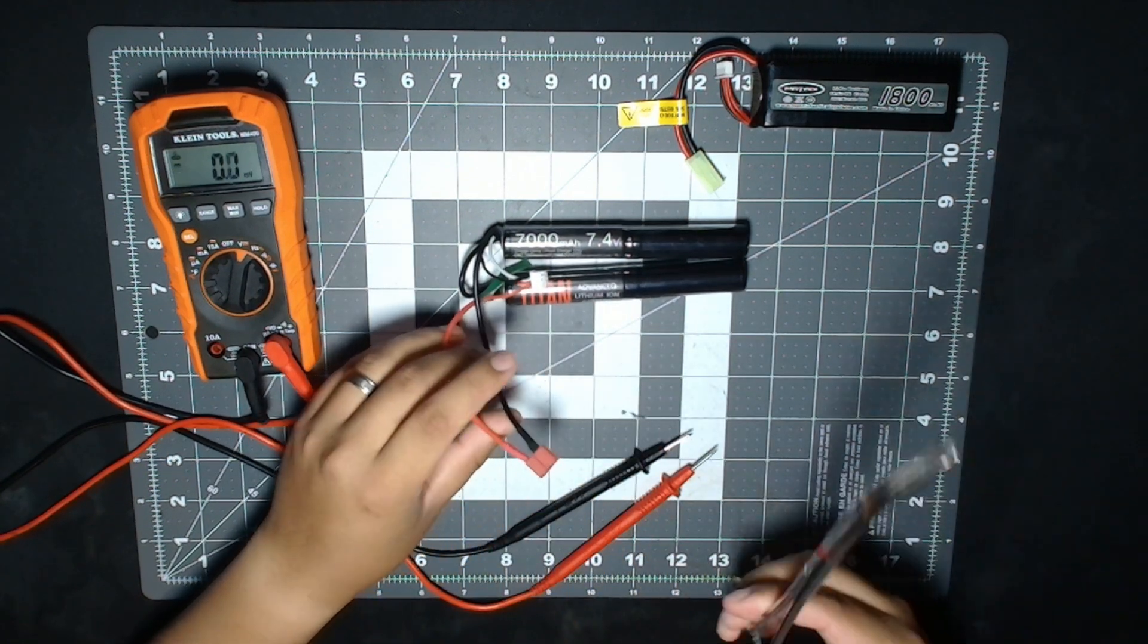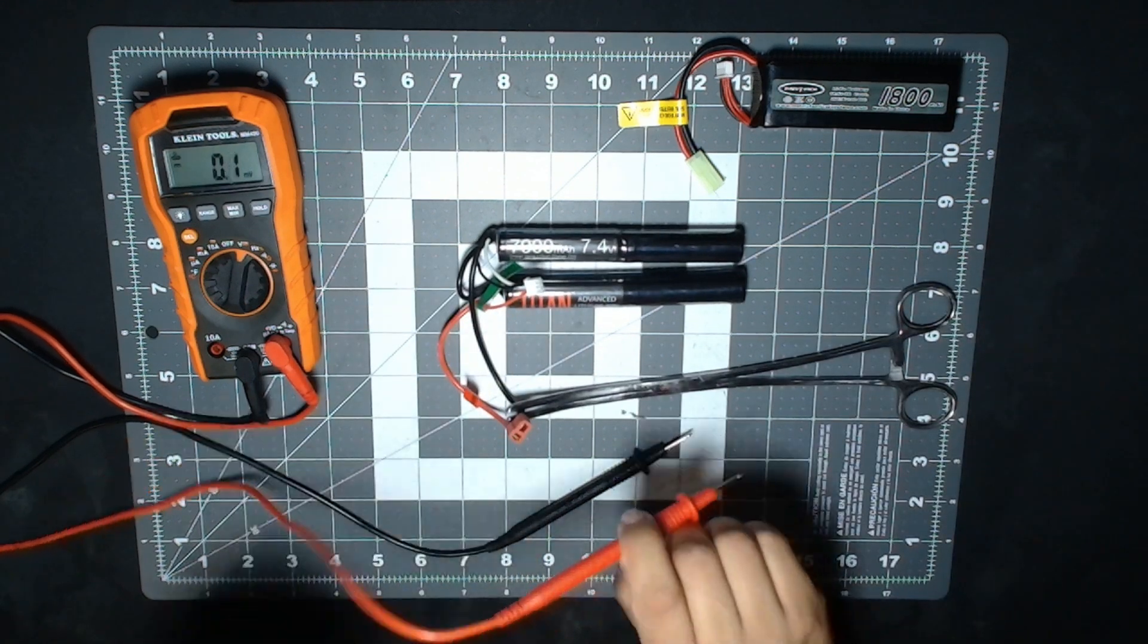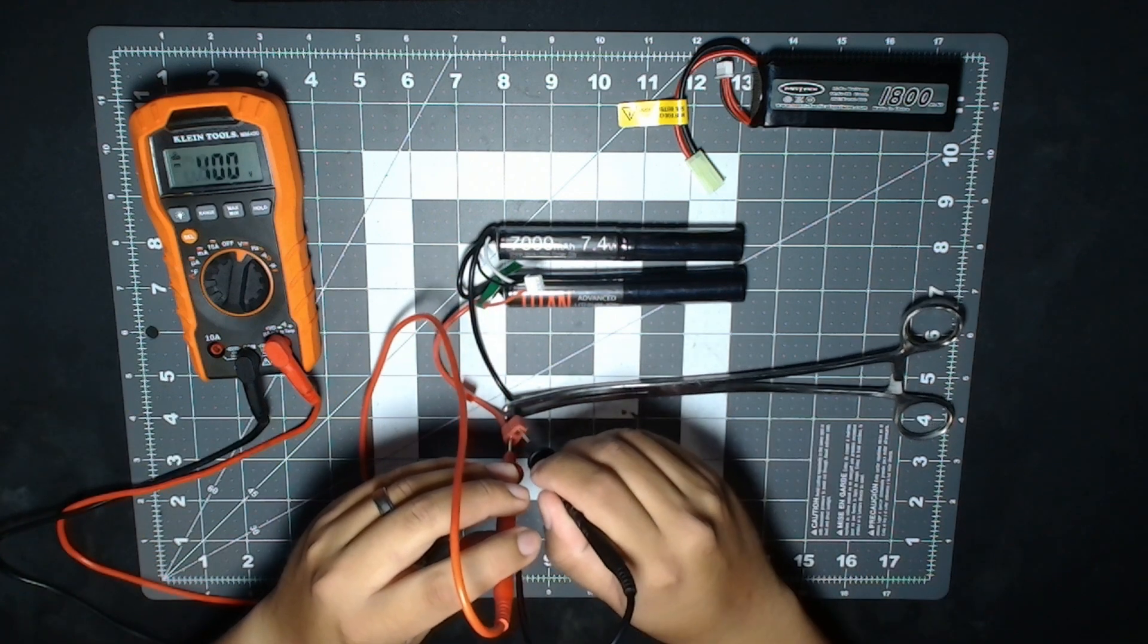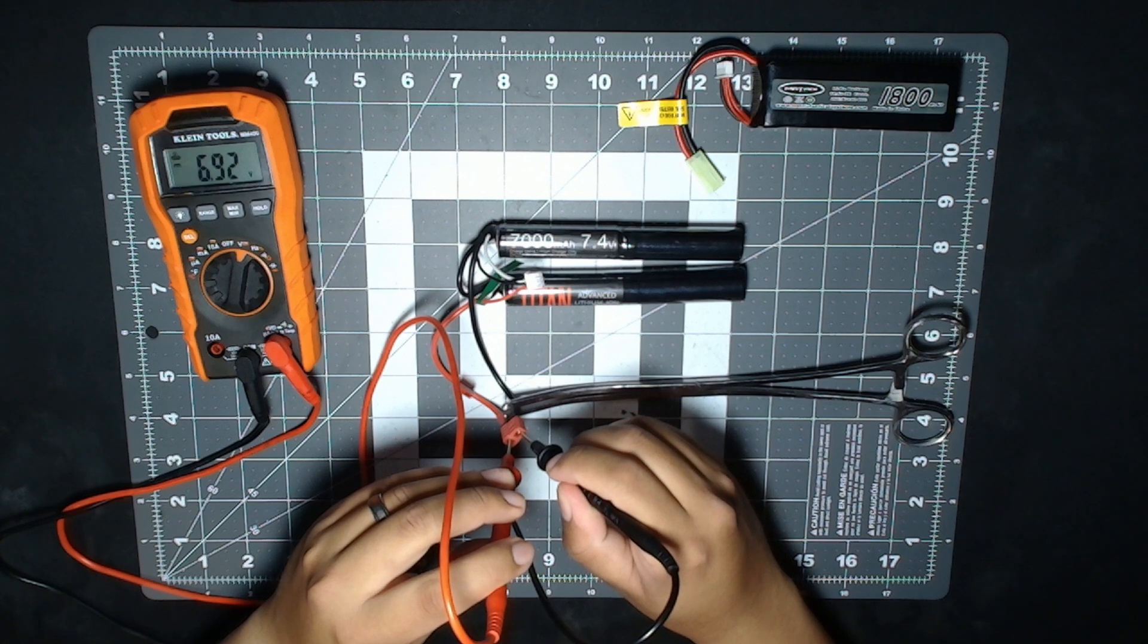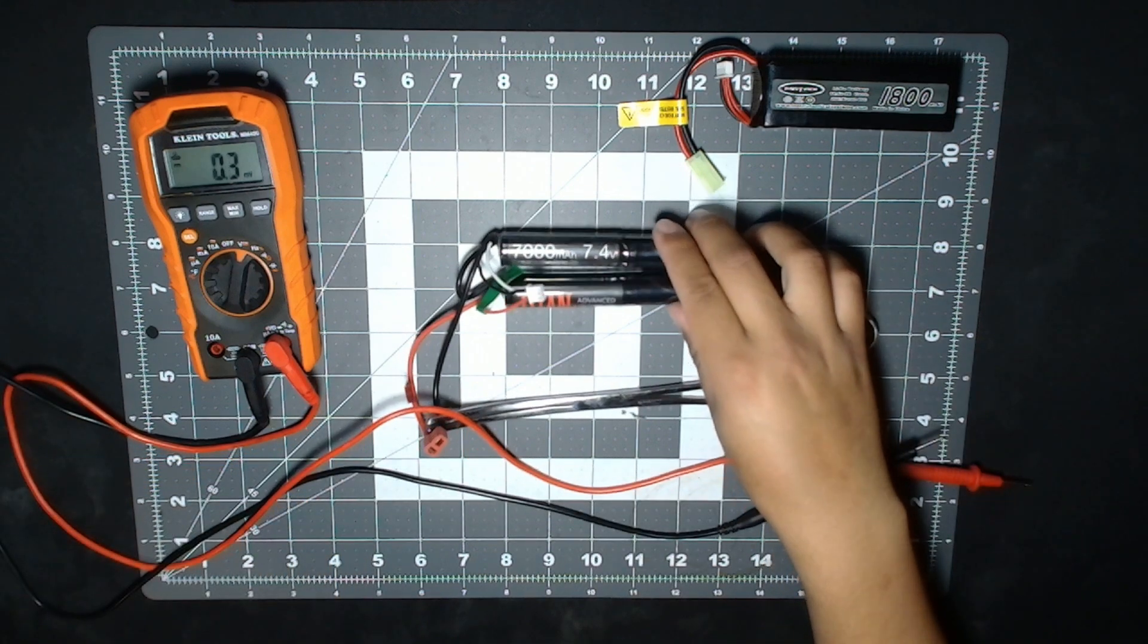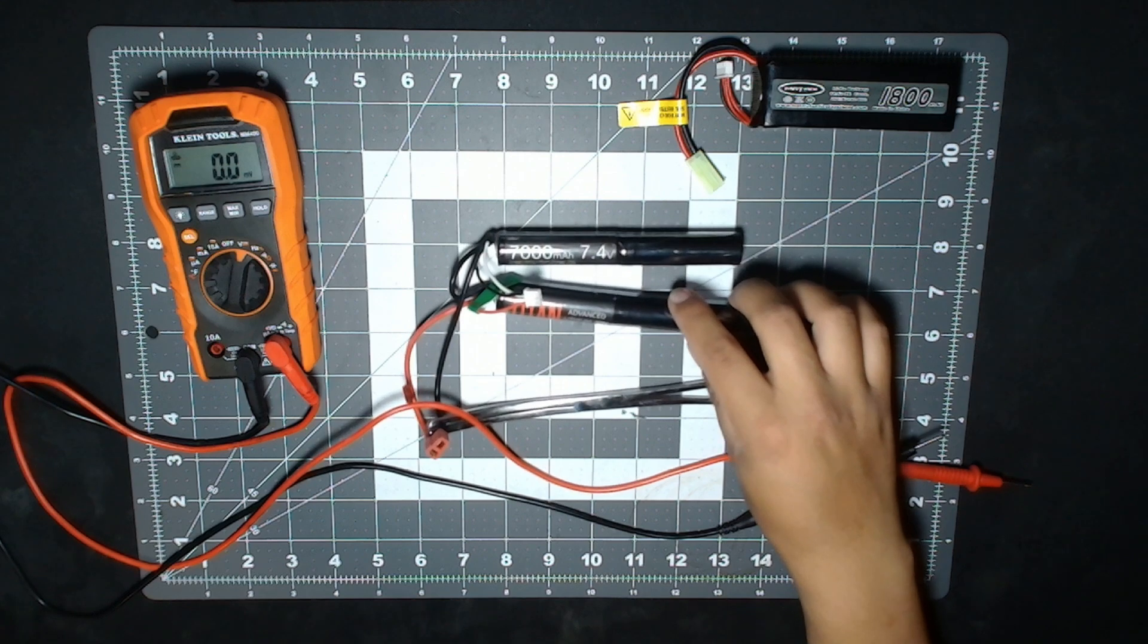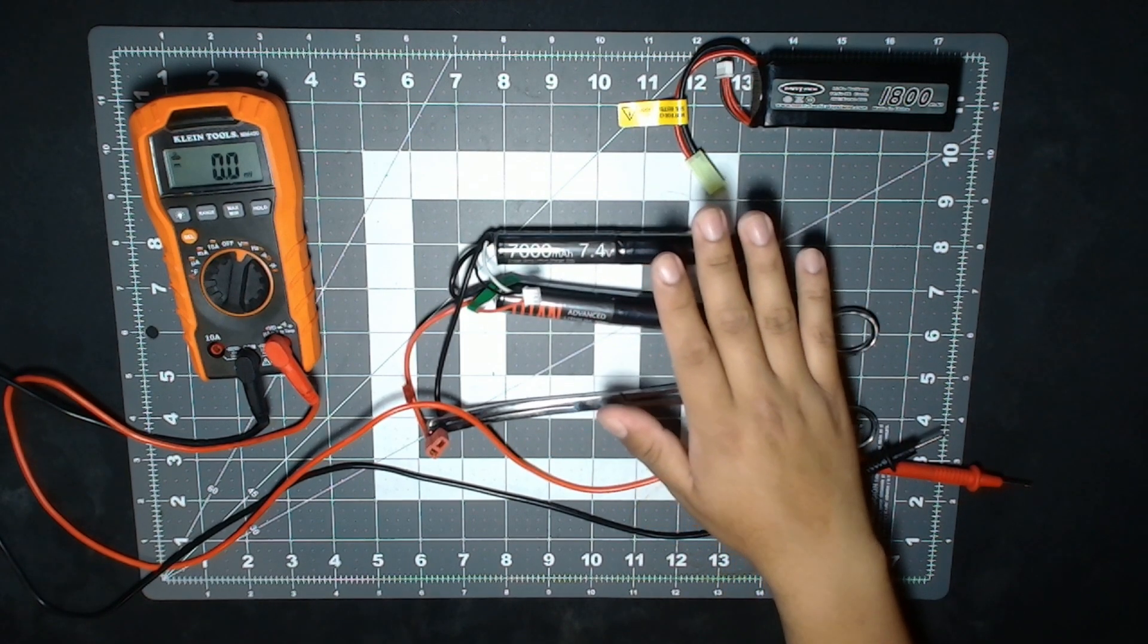The way I normally do it is I just get some forceps to hold the battery plug and then put the red with the red, the black with the black. Since this is a 7.4V battery, we're getting 6.92 volts. For a fully charged 7.4V you should be getting around 8.4 volts because it's a two-cell battery—4.2 volts per cell.